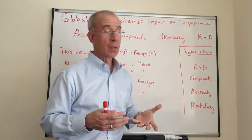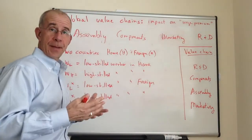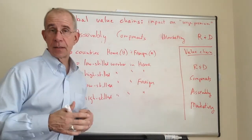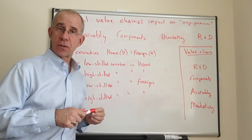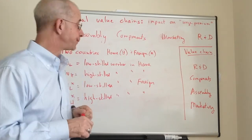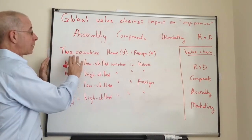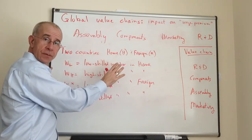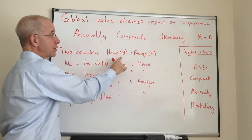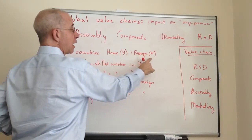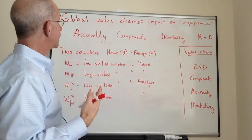We're going to develop a very simple model taken from the Feenstra and Taylor textbook that looks at two different countries: home and foreign. Home is going to be designated by H and foreign by star.